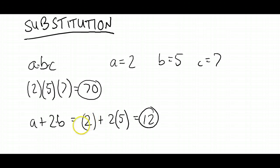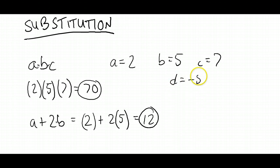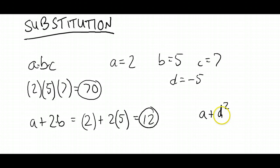Just substitute the values in, and then let the result take care of itself. One maybe slightly tricky thing is when you've got to substitute a negative value in, so let's say D equals negative 5, and then we've got an expression like A plus D squared. That can be a little bit trickier.